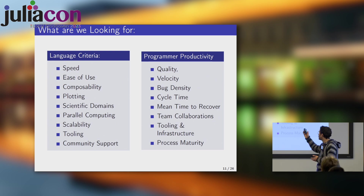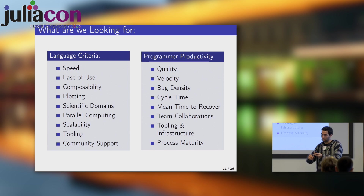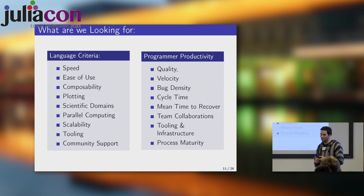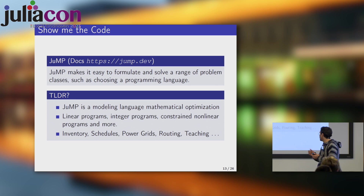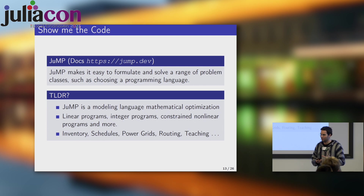I put some of the criteria into single words, and then defined variables and rated different programming languages, giving them numbers — which is completely unscientific because it's my own opinion. There will be a survey and you should be able to tell me if you disagree and what is important. There's a library called JuMP which is easy for formulating mathematical optimization problems. It's used in many different fields such as inventory scheduling, power grids, routing, telecoms, and more — or choosing the correct programming language, like we will do today.